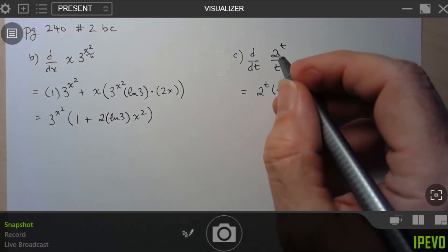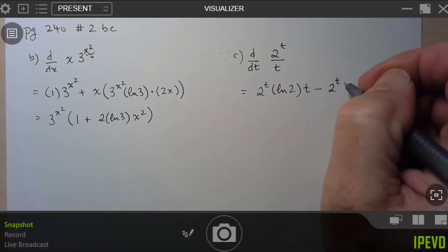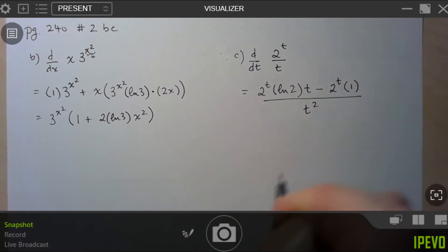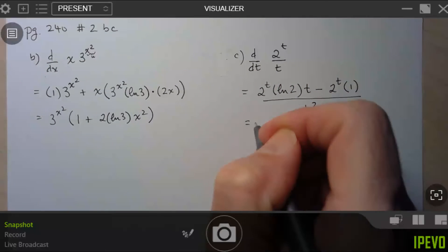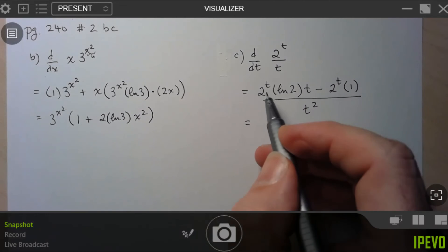...and then minus the numerator function, 2 to the t, times the derivative of the denominator function, which is just 1, all over the denominator squared. And again, if we did want to simplify this, you look for that common factor of 2 to the t.